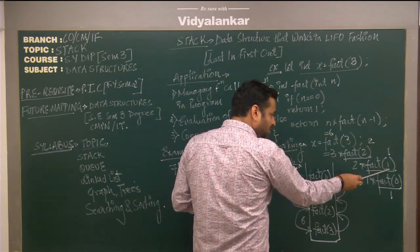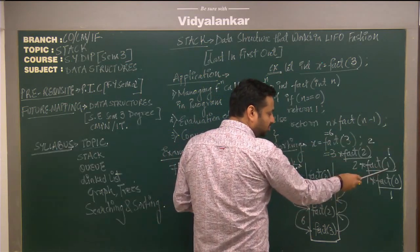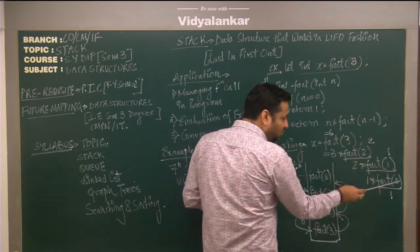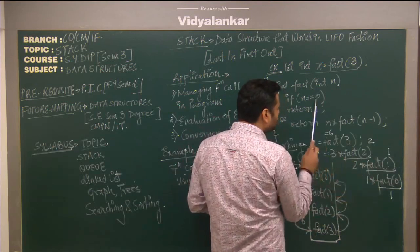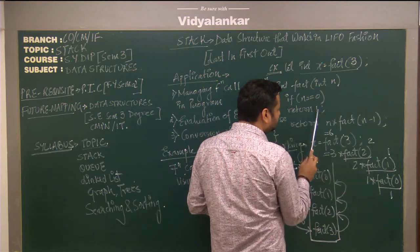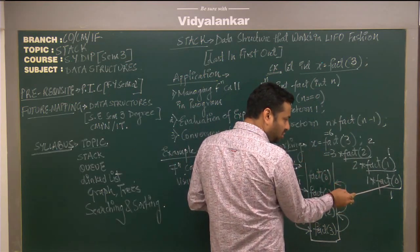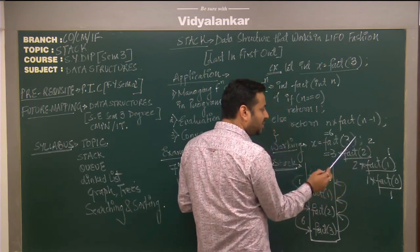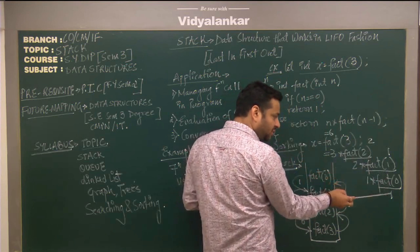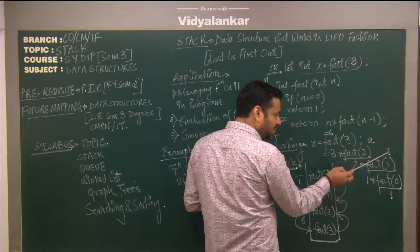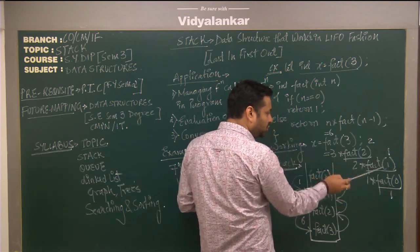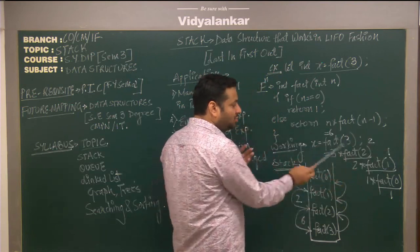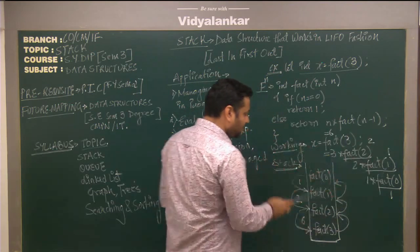For n equals 1, since it is not 0, it returns 1 into fact(0). Since n is 0, the function returns 1. So fact(0) is called by fact(1), which is called by fact(2), which is called by fact(3). Therefore fact(0) returns 1, fact(1) returns 1 into 1 equals 1, fact(2) returns 2 into 1 equals 2, and fact(3) returns 3 into 2 equals 6.